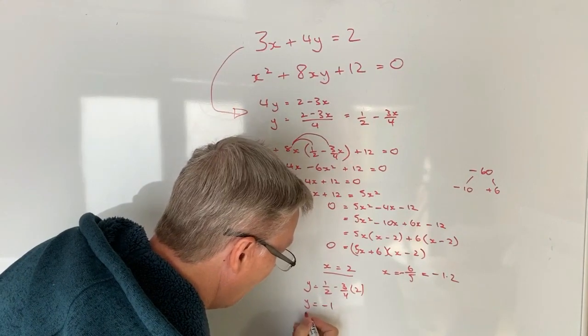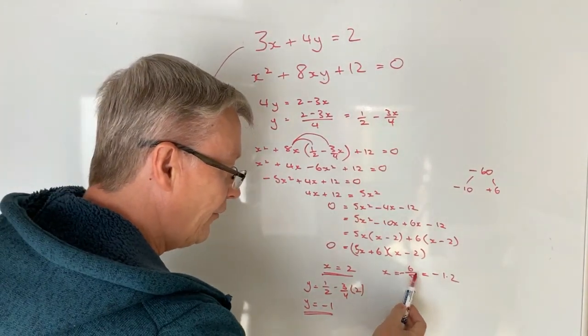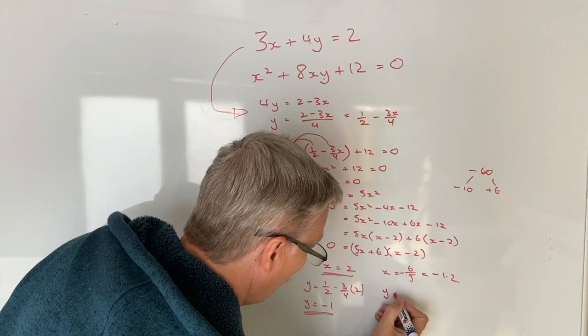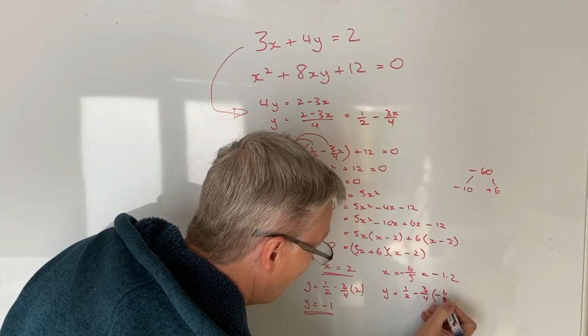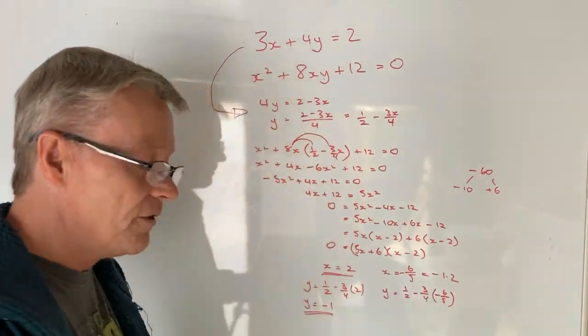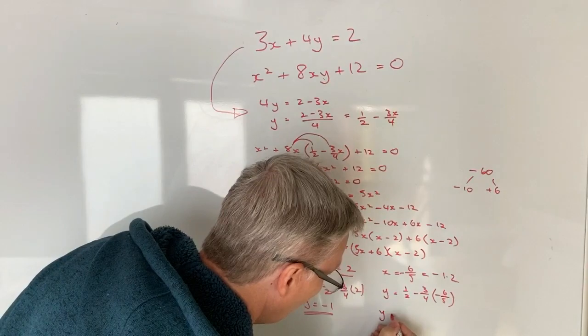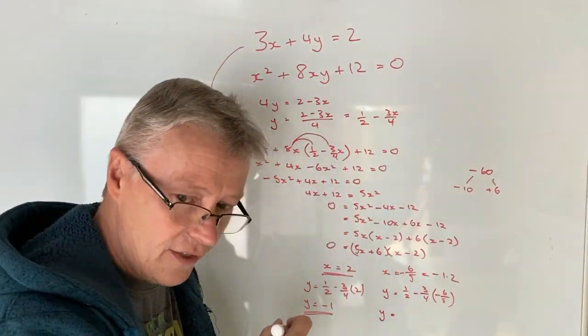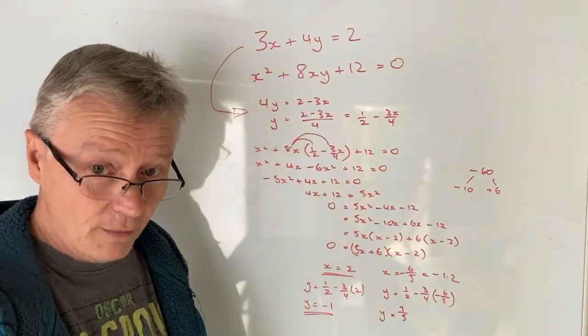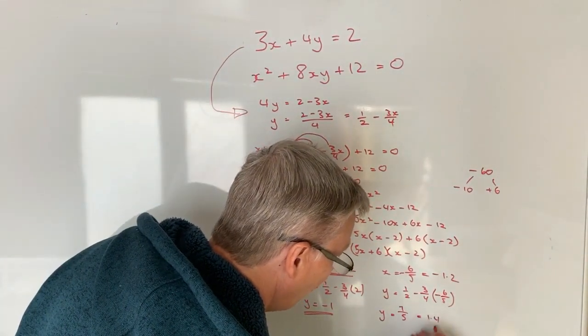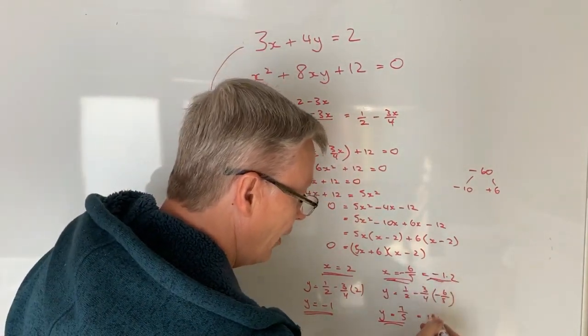And then finally putting in this fraction or this decimal into the equation I'm going to get y equals a half minus 3 over 4 multiplied by, don't forget, minus 6 over 5. So minus times a minus is going to be a positive and what I'll end up with after all that calculation is going to be y equals 7 over 5. Yep 7 over 5. Or if you're working in decimals you're going to get y equals 1.4 and it doesn't really matter if you prefer to work with decimals or fractions that's perfectly fine.